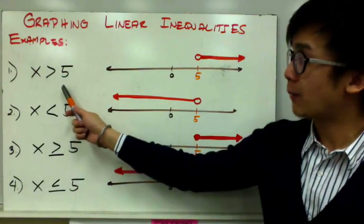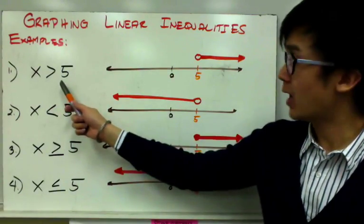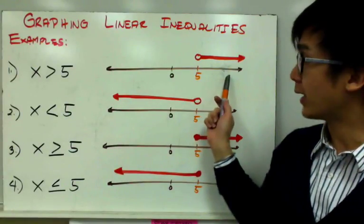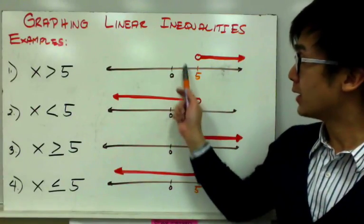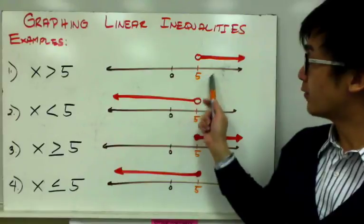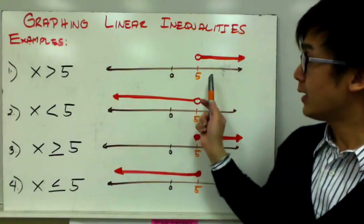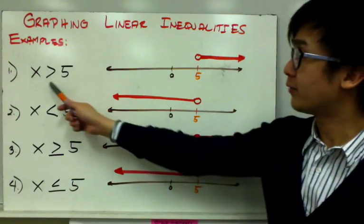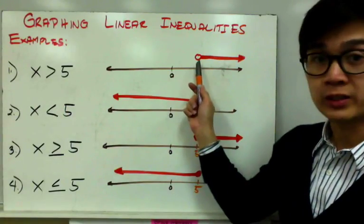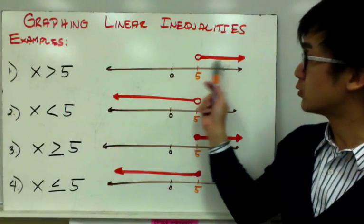For my first example, I'm going to graph x greater than 5. To graph it you will need your number line. In the middle I have 0, and positive 5 is on the right side of the number line. To graph greater than 5, you just need an open circle and shade your region to the right.